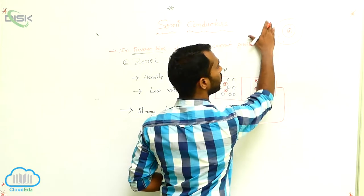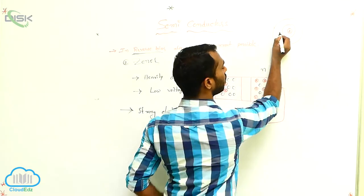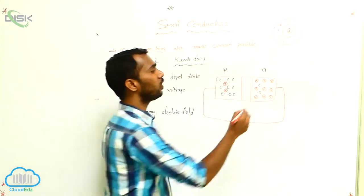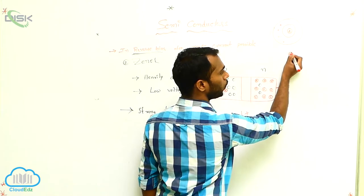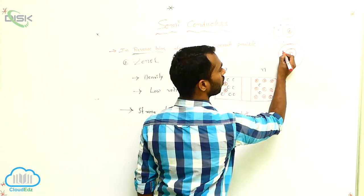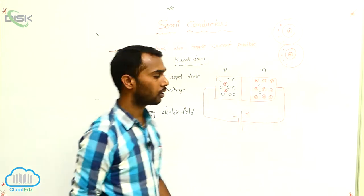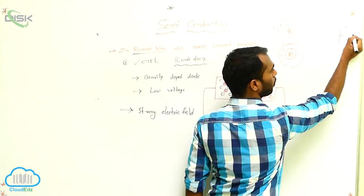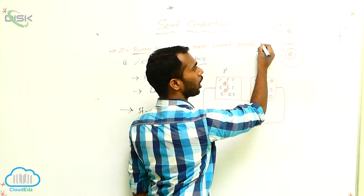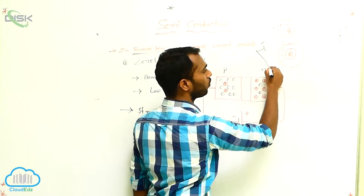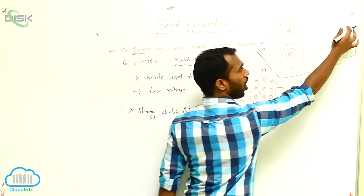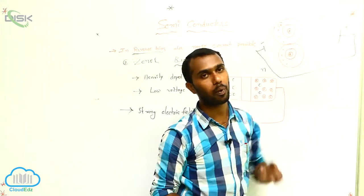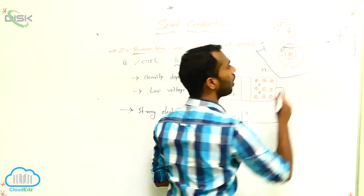I am explaining this concept using an atom diagram. This is an atom that consists of electrons. Electrons are negatively charged particles. Here is another atom — the nucleus is at the center surrounded by orbitals, and the orbitals consist of electrons. Because of the strong electric field, the positive terminal attracts the electron, so this electron moves towards the positive terminal.